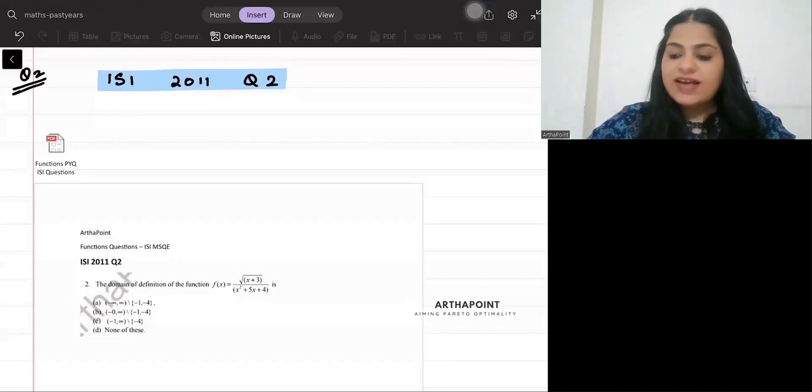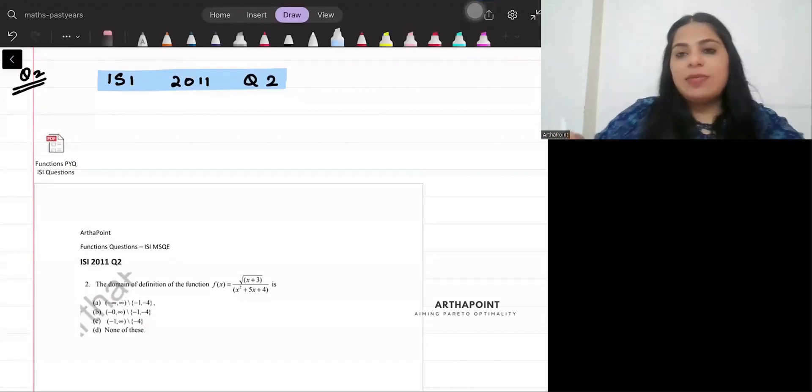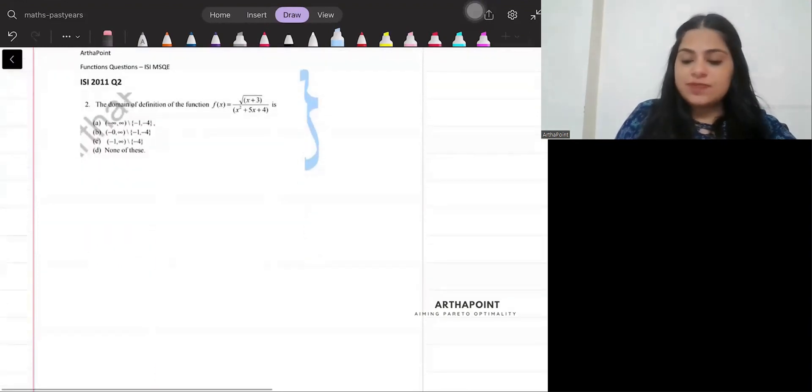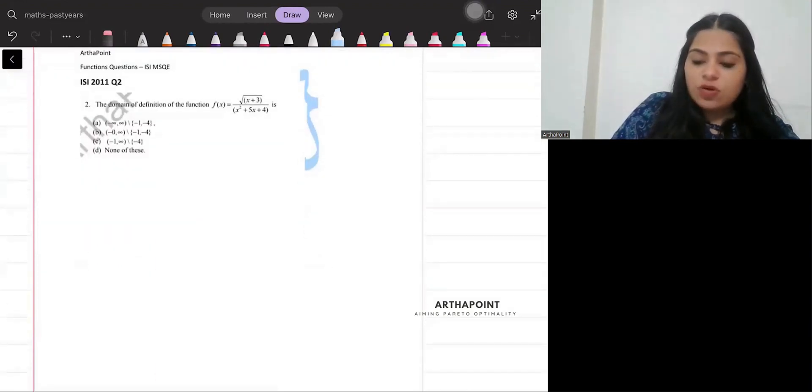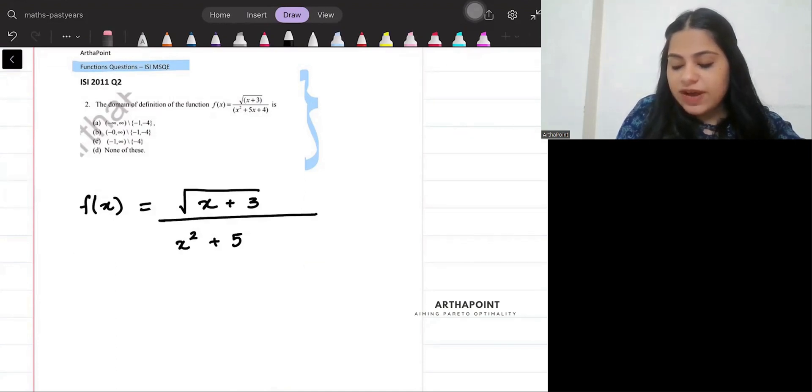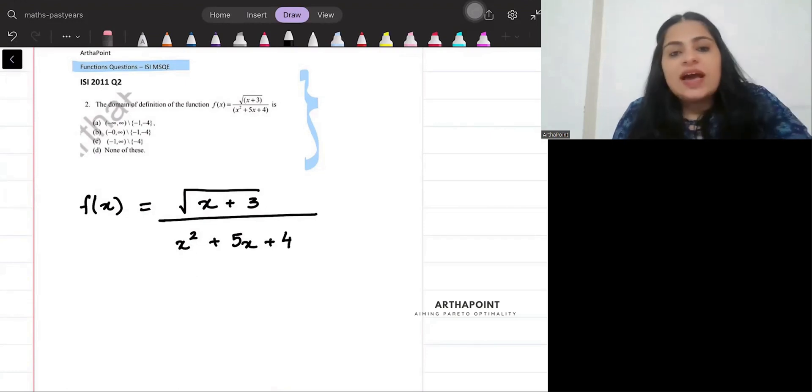Hello everyone, welcome to the ISI series. Today we will take ISI 2011 question number 2. This is the question, let us try to solve this. This is a question from the module functions. You are given a function and the function is square root of x plus 3 upon x squared plus 5x plus 4.